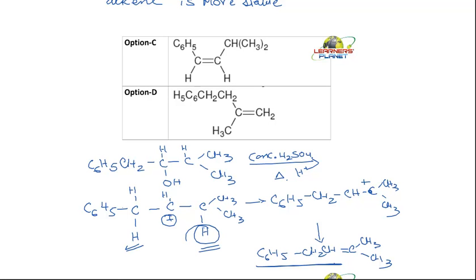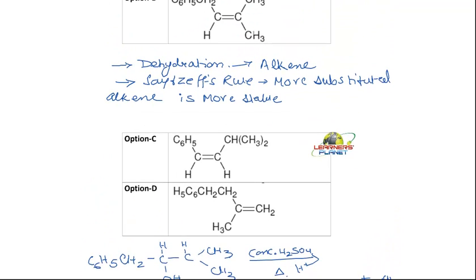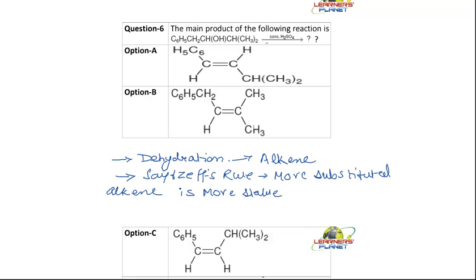The two hydrogens are available for removal — this one as well as this one. But if this hydrogen is removed, there will be a tertiary carbocation formed via a hydrogen shift. This carbocation is secondary — less stable — and here there is formation of a tertiary carbocation. So the hydrogen shift takes place and this gives a more substituted product. Option A is the most stable product.